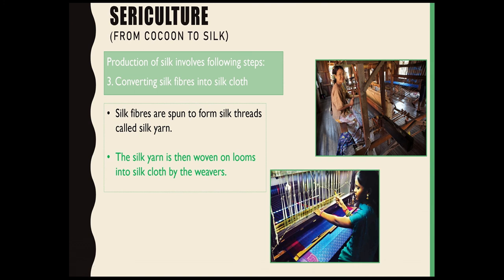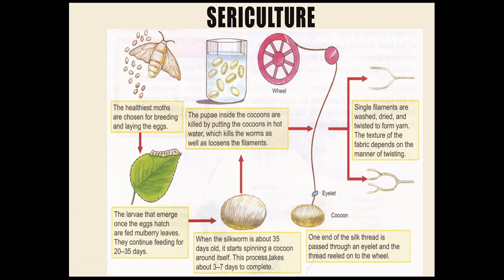The last step in silk production is converting the silk fibers into silk cloth. Silk fibers are spun to form silk threads called silk yarn. Then the silk yarn is woven on looms into silk cloth by the weavers. This picture summarizes the entire process of sericulture.